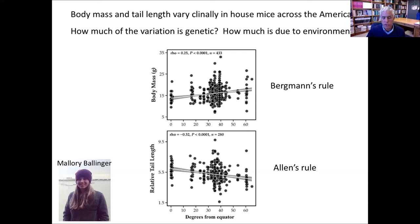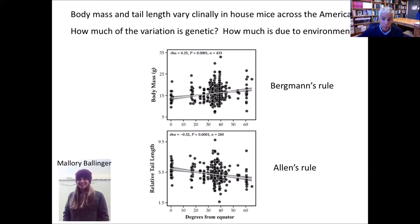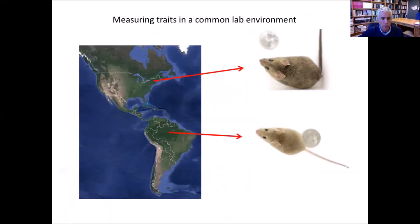In the literature on Bergmann's rule and Allen's rule, there's an implicit assumption that because you see it in many species it must be genetic and reflect adaptation. But if you go back and read Allen's original paper from the 1800s, he actually emphasizes the direct role of the environment — phenotypic plasticity — in generating this pattern. This was work done by former graduate student Mallory Ballinger. What she did, commonly done in plants and less often in animals but done notably in Drosophila, is bring animals into a common lab environment — a harder experiment to do in mammals — and keep them for many generations.